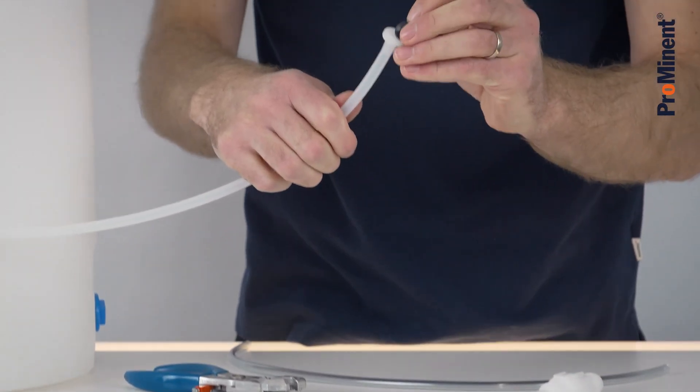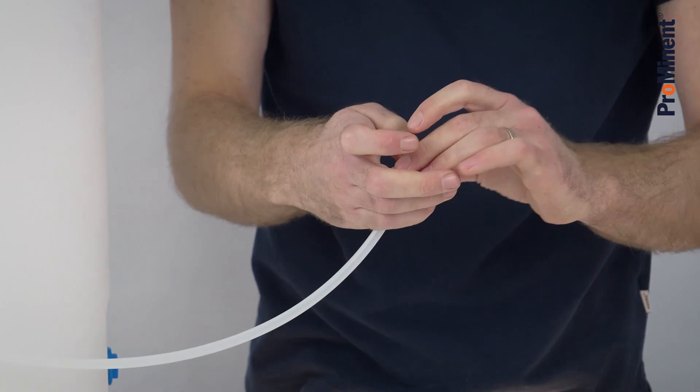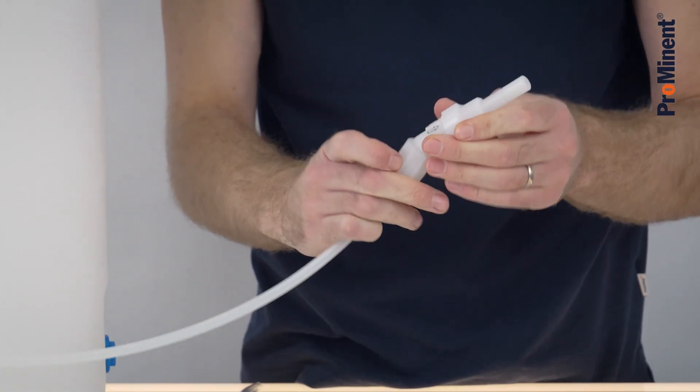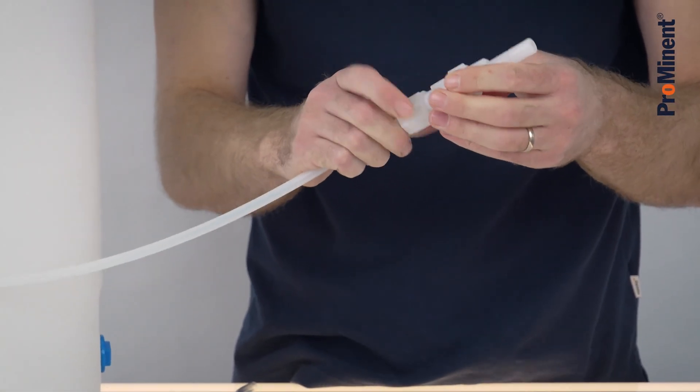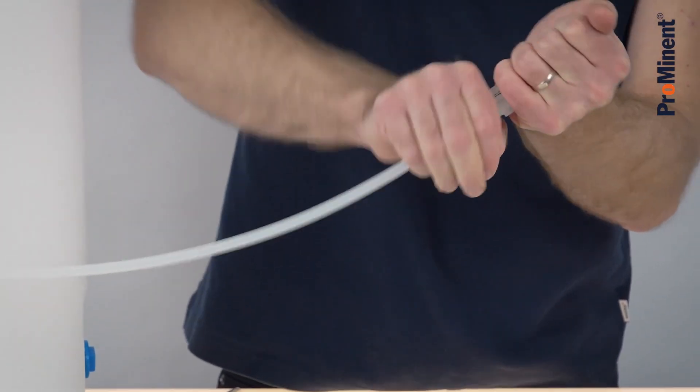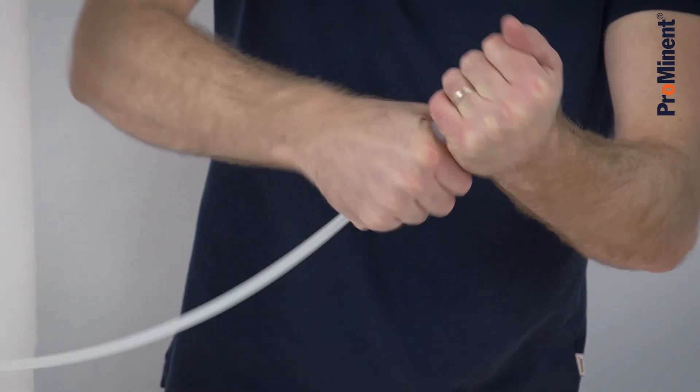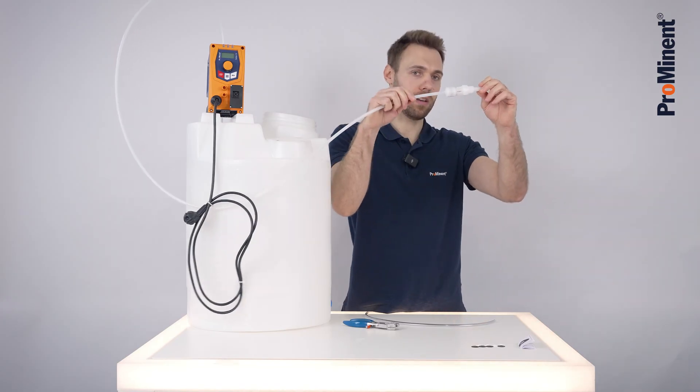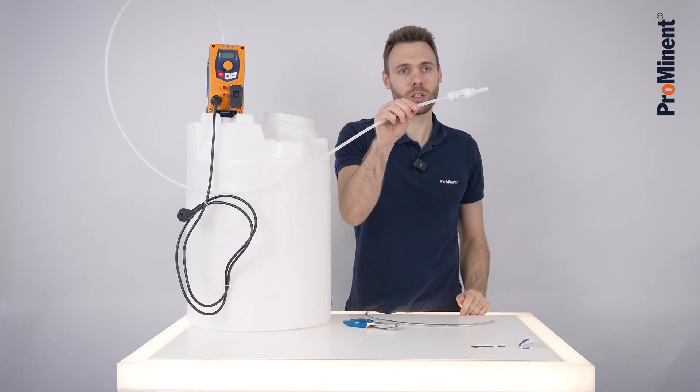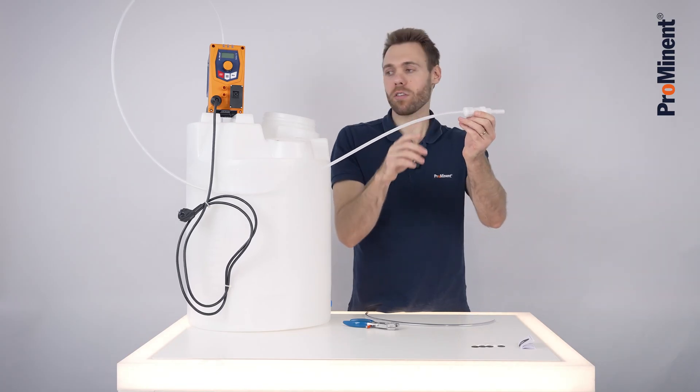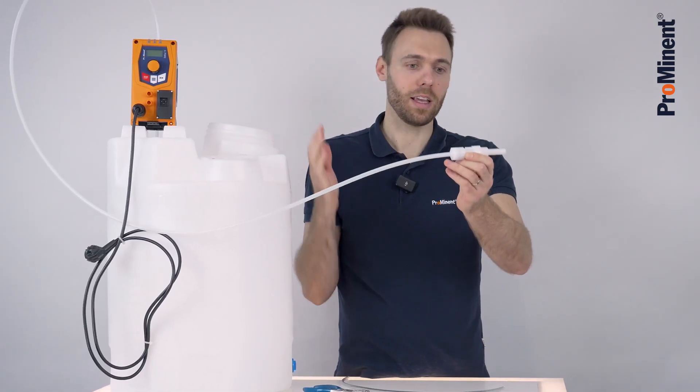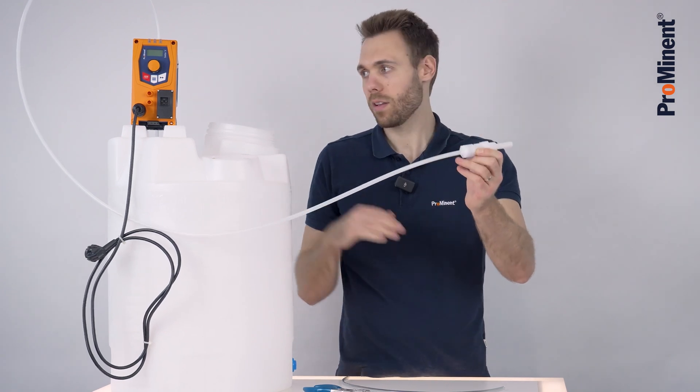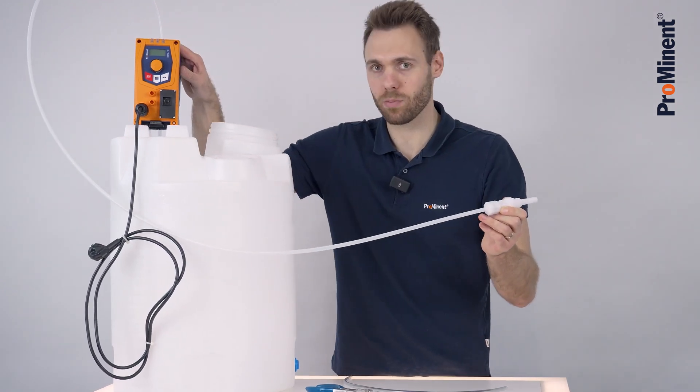Select the correct sealing for your medium and connect the injection valve. This injection valve could then be screwed in a pipe with water and now you could inject for example chlorine or hydrogen peroxide into a water line. This is how to pipe up a Beta X properly.